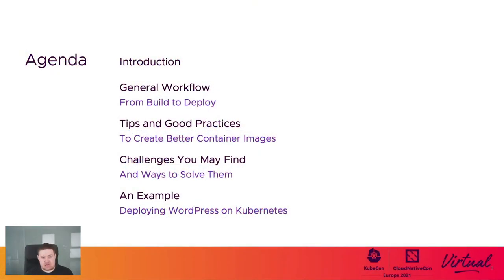This talk is structured into five parts. First, we will have a brief introduction. Next, we will talk about the different steps you will follow if you want to deploy a traditional web application on top of Kubernetes. Afterwards, we'll give some tips and good practices and discuss some particular challenges you may find, and finish the talk with an example. At the end, I will be here to answer any questions you may have.